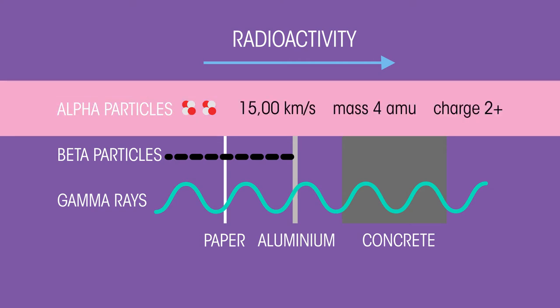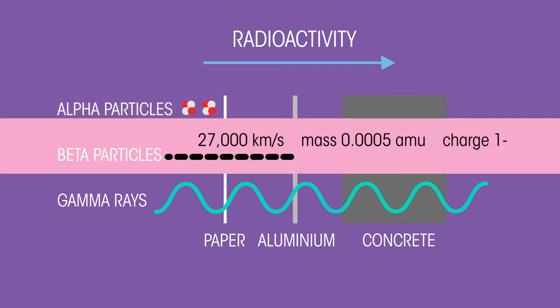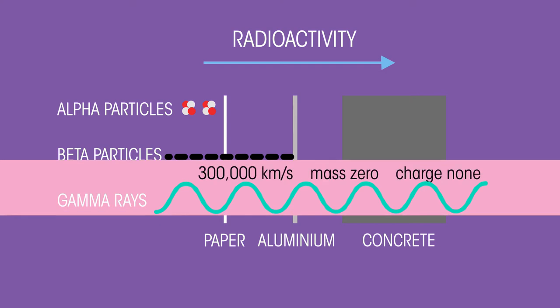Alpha is a slow-moving helium nucleus made of two protons and two neutrons with a double positive charge. Beta is a very fast-moving electron with a single negative charge. And gamma radiation is electromagnetic like radio waves, light and x-rays, but is much more energetic.